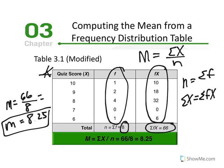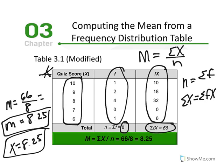The purpose of a measure of central tendency is to summarize a distribution using one value. Here, X = 8.25 is the best representative of this distribution of quiz scores. Notice that 8.25 isn't even one of our actual X values — but that's acceptable because we're calculating the mathematical center. Of these eight quiz scores, 8.25 is the center and best representative value.